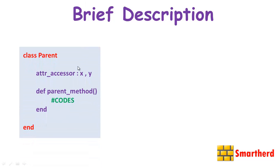Let's say we have a class called Parent. Inside the class Parent we have two instance variables x and y, and we have a method named parent_method. All these things — the class Parent, x, y, and parent_method — are user-defined. You can name them whatever you wish.